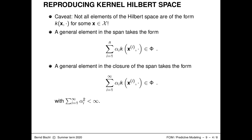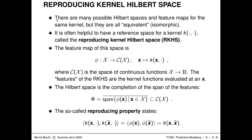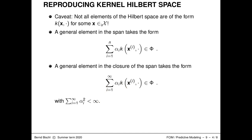A few extra comments: not all elements of the Hilbert space are of the form phi(x), since we also needed to take the span and then complete it. A general element in the span is a finite linear combination of these basis functions. A general element in the closure of the span takes an infinite sum form, and we must ensure convergence — which holds under the assumption that the sum of squares of the coefficients is finite. This becomes technical rather quickly.